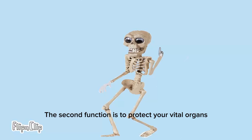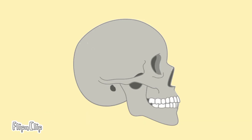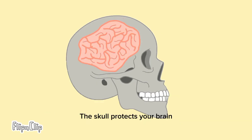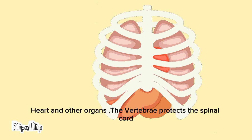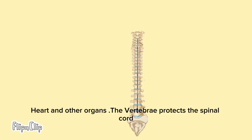The second function is to protect your vital organs. The skull protects your brain. The ribcage protects your lungs, heart and other organs. The vertebrae protects the spinal cord.